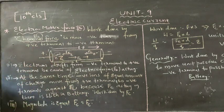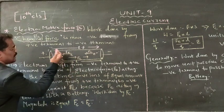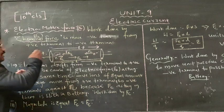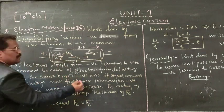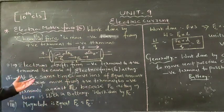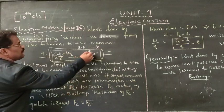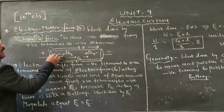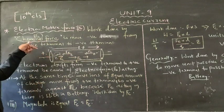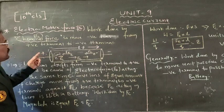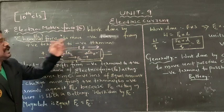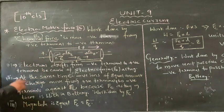Negative ions will act towards the positive terminal. So, what happens when all negative ions move — an equal amount of charge will move from the positive terminal to the negative terminal, with chemical force acting against the electric force.